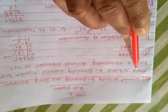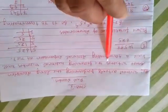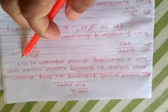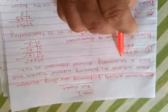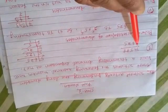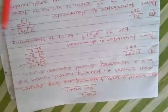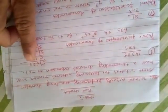Now the next question is: without actually performing the long division, state whether the following rational numbers will have a terminating decimal expansion or not. Terminating decimal expansion means the division will terminate at some place — that is, the remainder must come to 0.